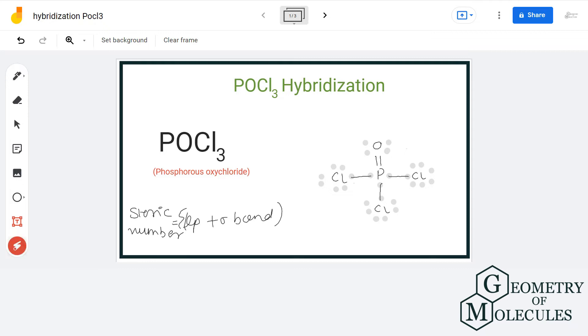Let us have a look at the Lewis structure of phosphorous oxychloride. We can clearly see that central atom phosphorous has formed three sigma bonds with three chlorine atoms and one double bond with one oxygen. We also know that double bond has one pi and one sigma bond.